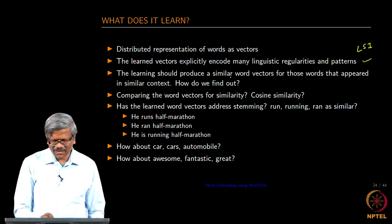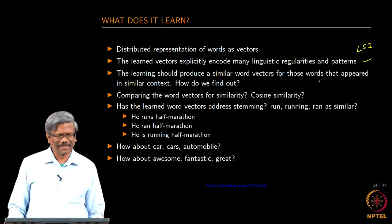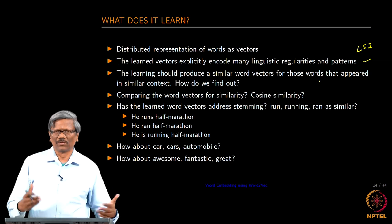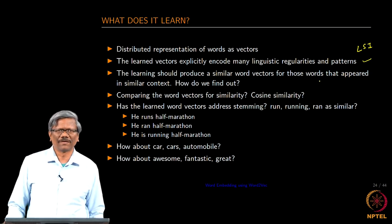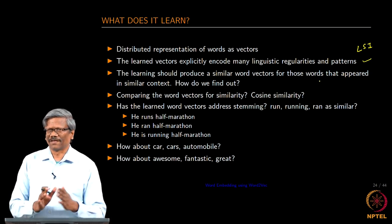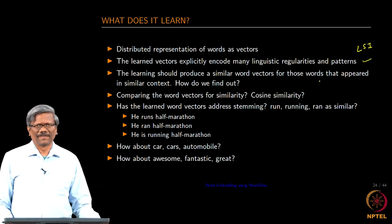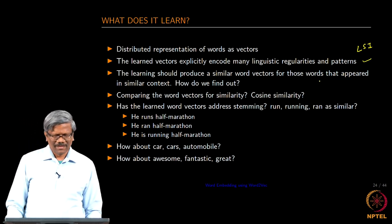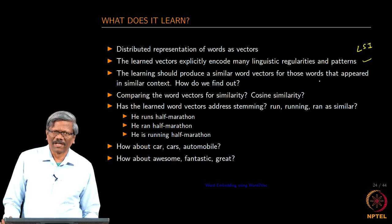The learning should produce similar word vectors for those words that appeared in similar context. How do we find this out? How do we compare those words to find out whether these words occur in the corpus and they are similar?